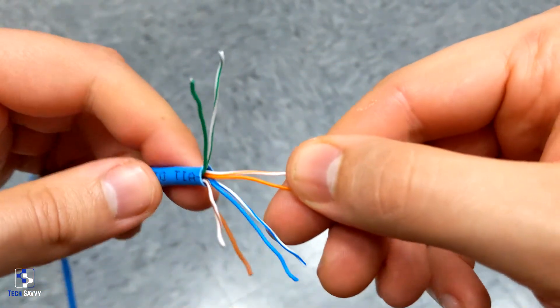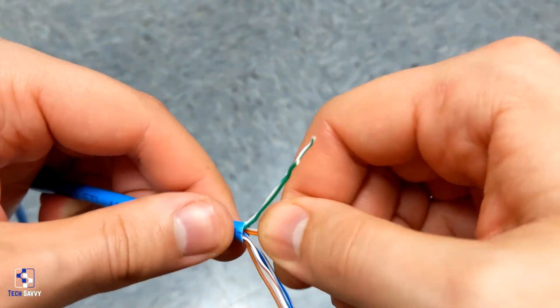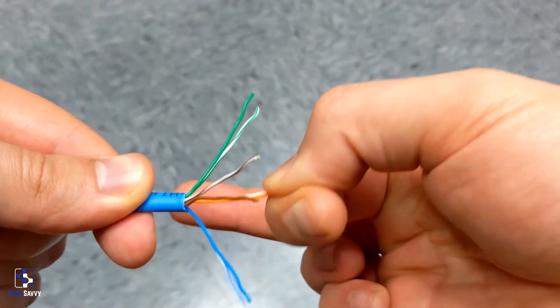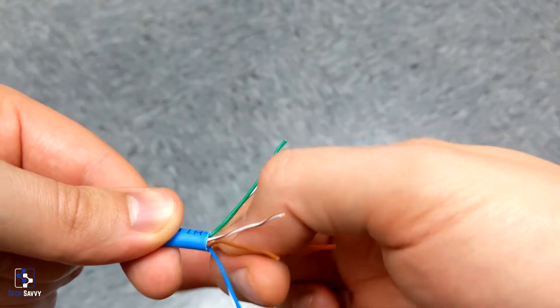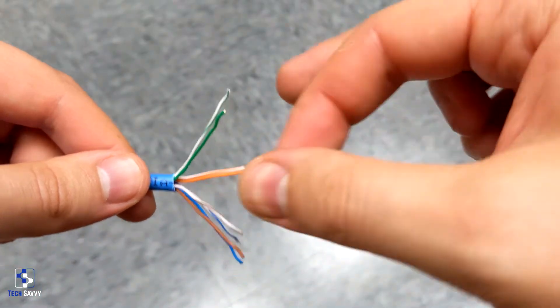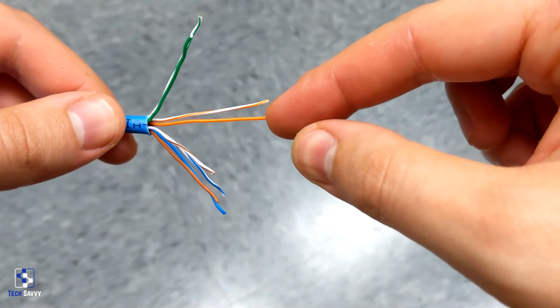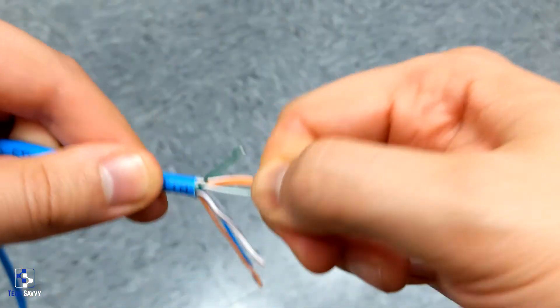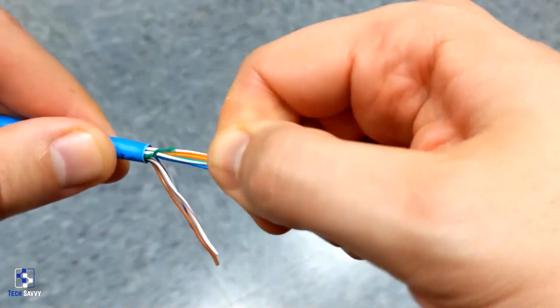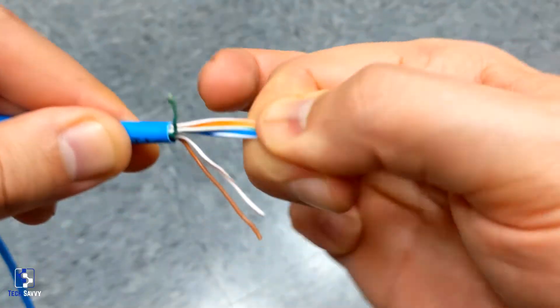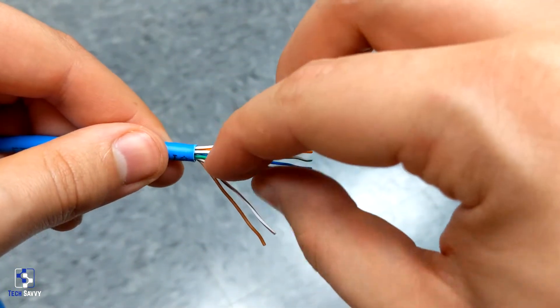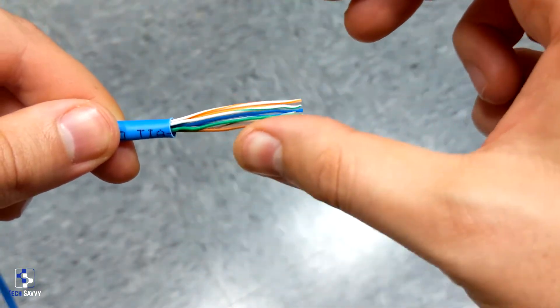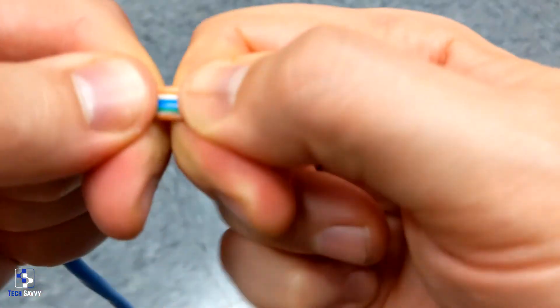So I'm going to be taking individual wires and shaping them as we go. Now what I'm doing here to keep these together is I am bending them up and down to shape any of the curves out of the wires. So we have orange-white, orange, green-white, blue, blue-white, green, brown-white, brown, and I'm shaping them all together as a set.